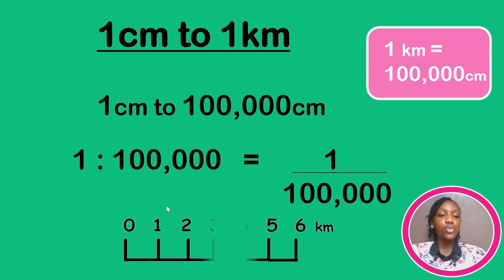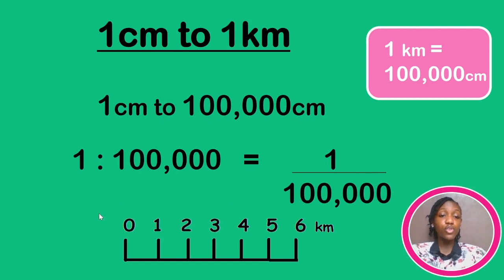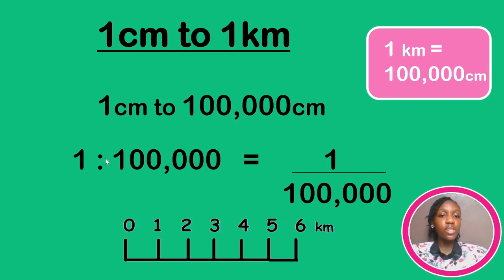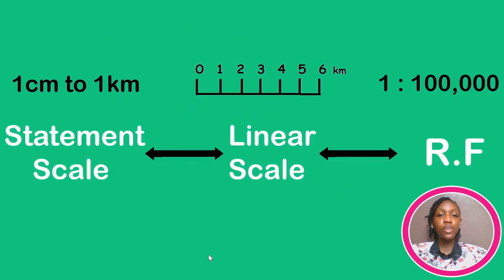Now drawing the linear scale won't be too difficult. In your objectives it looks more like a number line. The space between intervals is one centimeter — remember, always measure, never assume — and the interval between numbers is one kilometer. Take note of the units at the end. So putting it all together: statement scale is one centimeter to one kilometer, representative fraction is 1:100,000, and the linear scale shows one centimeter intervals labeled in kilometers.